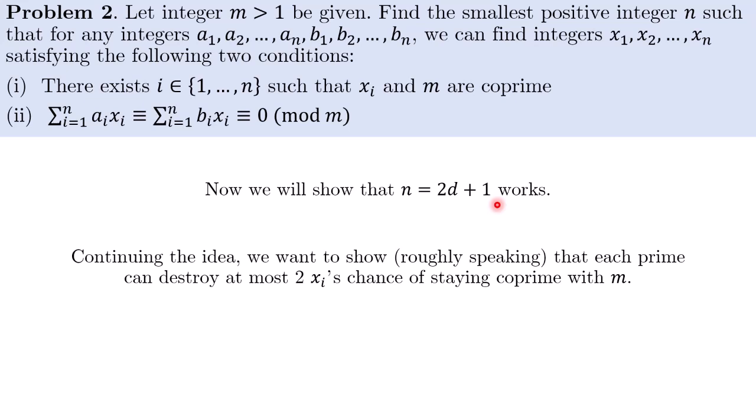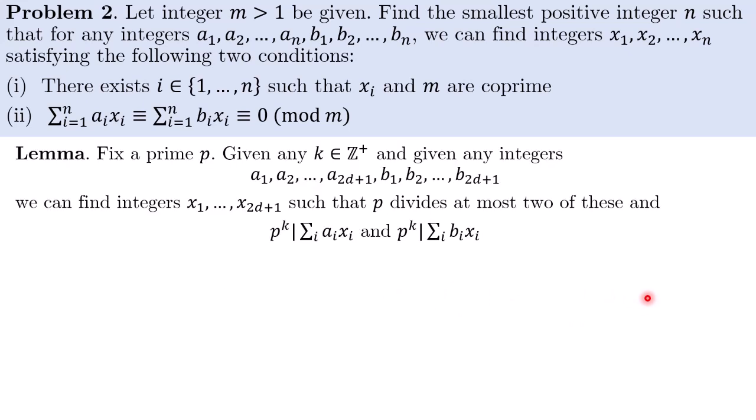And this is just an extension of what we showed in the previous slide. Actually, what we want to show is that each prime factor of m can destroy at most 2 x's chance of staying coprime with m. And the way we will do it rigorously is to establish the following lemma. So let us be given a fixed prime p and given any integer k, positive integer k, and given any integers a1 to a2d+1, b1 to b2d+1, we can find integers x1 to x2d+1 such that p divides at most 2 of these. And at the same time, pk divides sum aixi and pk divides sum bixi.